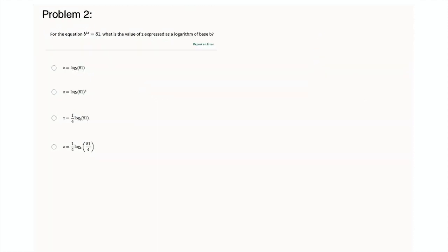All right, so number two, this is a log problem. So it says, for the equation b^(4z) = 81, what is the value of z expressed as a logarithm of base b? So with logs, it's important to know how to move between logarithmic form and exponential form and back again. So the main thing to know, just off the top of your head, you've got to memorize,